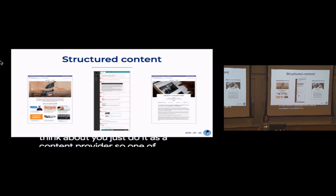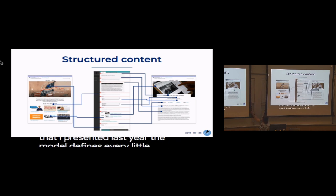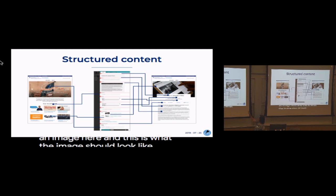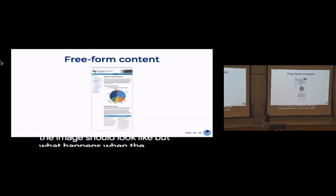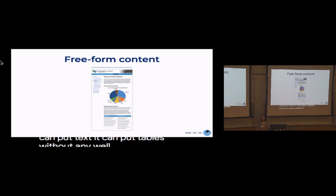One example is a structured content model for a website I presented last year, where the model defines every little component. But what happens when the website is just basically a skin or theme with content in the middle and we have no control over what the person puts in there? They can put images, text, or tables without any well-defined model — and this is usually what happens when we build sites with WordPress.